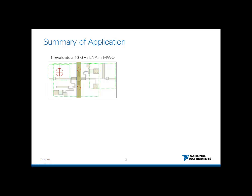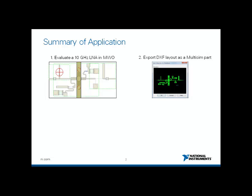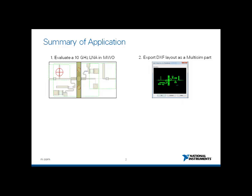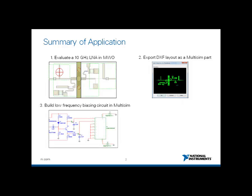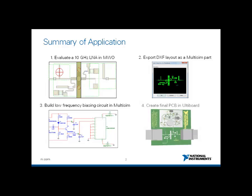Let's start with a quick summary of what we will be doing. The first step is to have the low noise amplifier designed in Microwave Office with a created layout for the RF section of it. Then this low noise amplifier will be exported using a DXF file into NI Ultiboard's database as a new component. Following that, the low frequency biasing circuit will be simulated in Multi-SIM where the low noise amplifier part will eventually be added to it to finally create the final PCB.